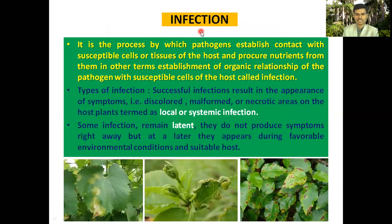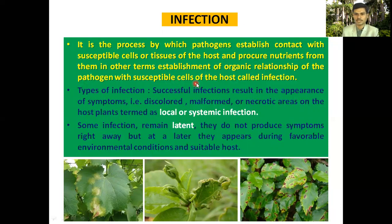The next event in disease development is infection. Infection is the process by which the pathogen establishes contact with the susceptible cells or tissue of the host and derives nutrients from them. In other words, infection is the establishment of an organic relationship between the pathogen and the susceptible cell of the host.